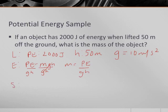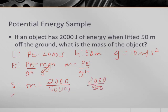M is equal to 2,000 divided by 50 times 10, or 2,000 divided by 500. And you get 4, and then since it's mass, kilograms.